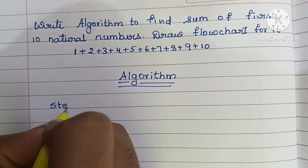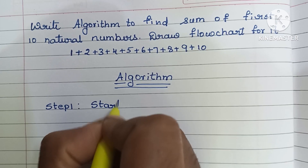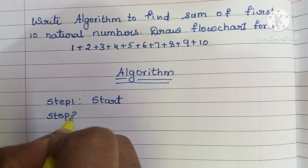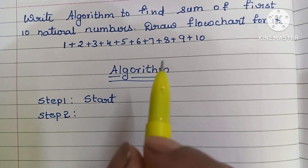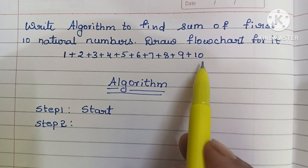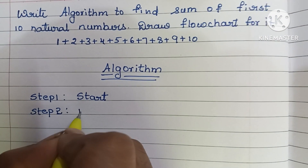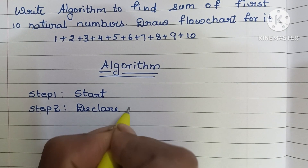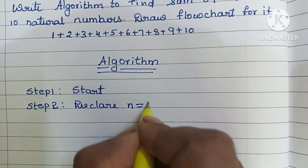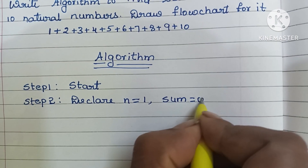Step 1: An algorithm always starts with a start statement. Step 2: There is no need to read an input value here, because we know the first 10 natural numbers start from 1 and end with 10. In step 2 we declare n is equal to 1 — that is the initial number. Next, initially sum is equal to 0, so declare sum is equal to 0.